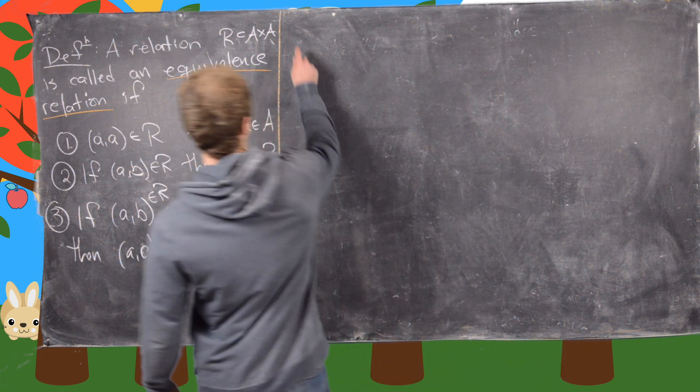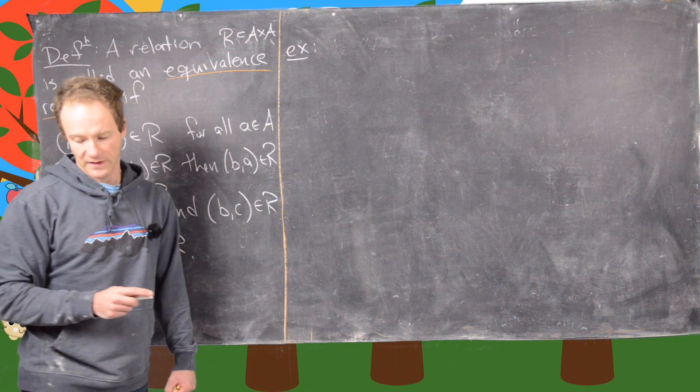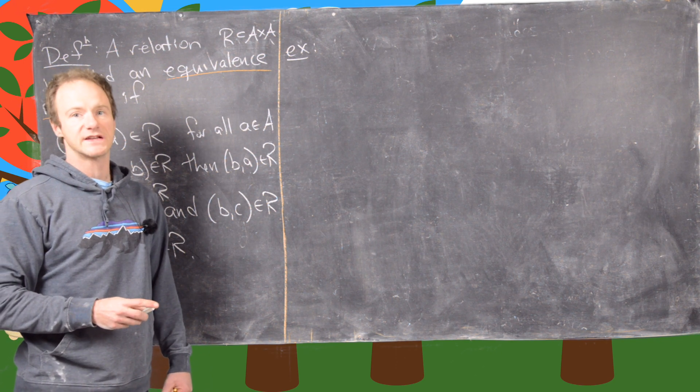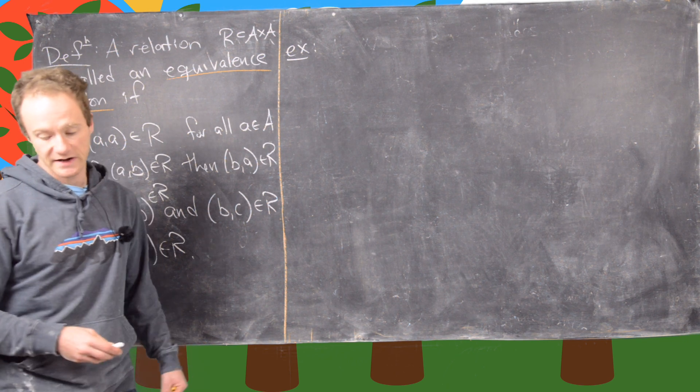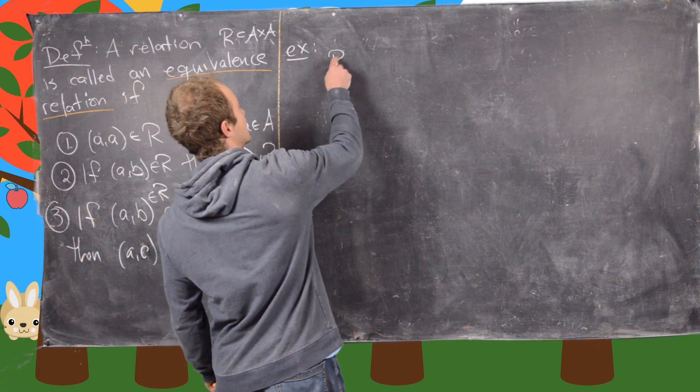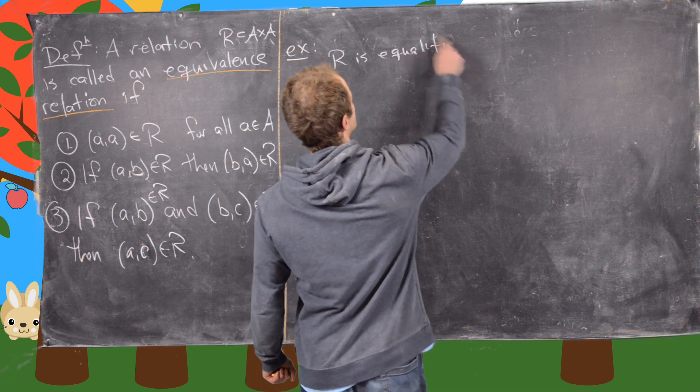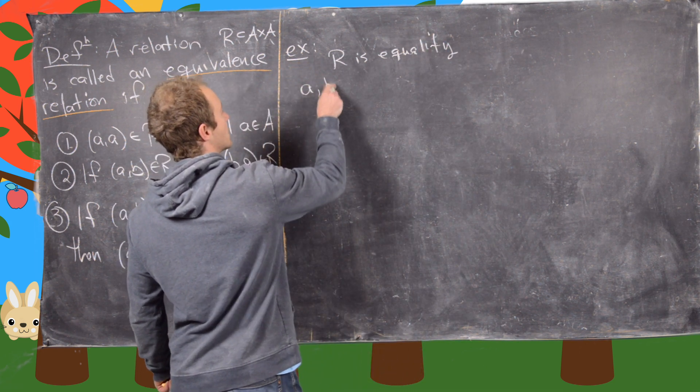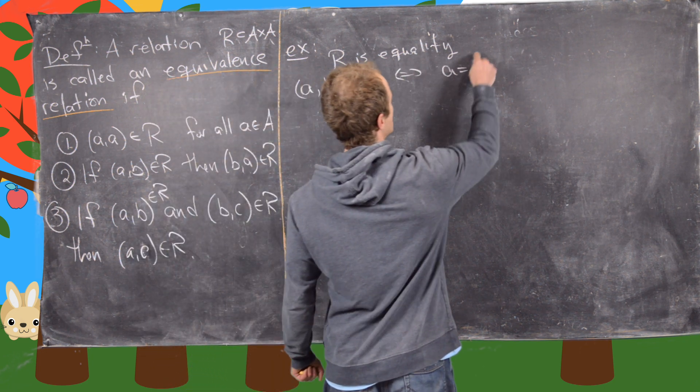So let's look at some examples. So the first example that I want to look at is, okay, the first two examples we're going to look at are really important, but they're kind of boring. And in other words, A comma B is in R if and only if A equals B.